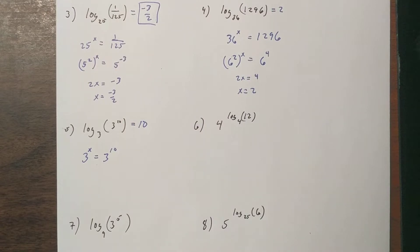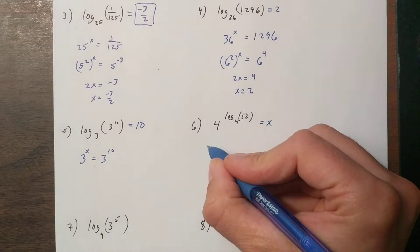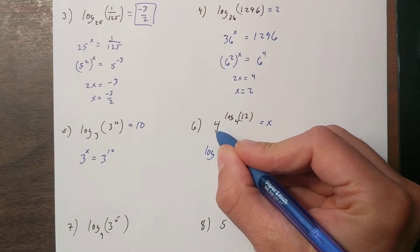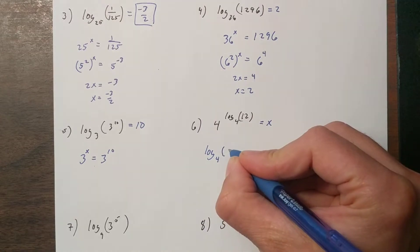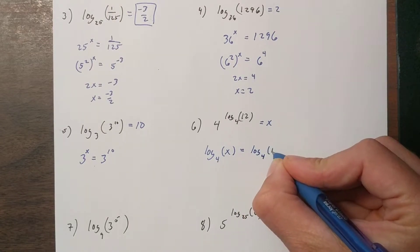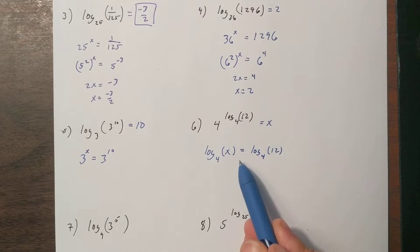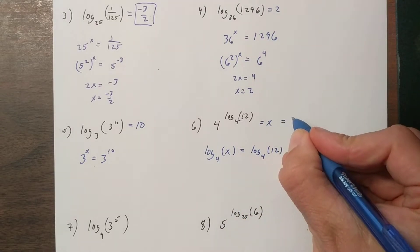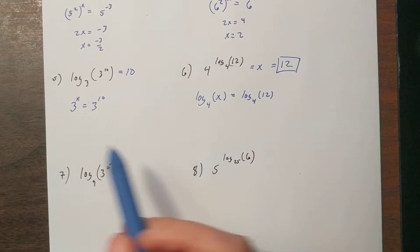This next one is written as an exponential that has a logarithm inside. One way to handle it is to rewrite the whole thing as a logarithm. If we do that, we get log base 4 of x equals log base 4 of 12. It's then obvious that x must simply equal 12, and you're done.